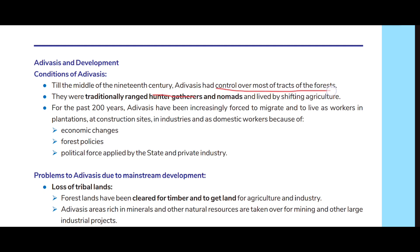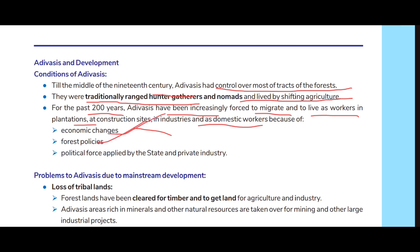Adivasis and development: Until the middle of the 19th century, Adivasis had control over most tracts of the forest. They were traditionally hunters, gatherers, and nomads, and lived by shifting agriculture. For the past 200 years, Adivasis have been increasingly forced to migrate and live as workers in plantations, at construction sites, in industries, and as domestic workers — due to economic changes, forest policies, and political force applied by the state and private industry.